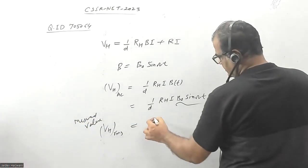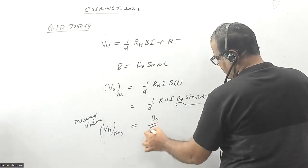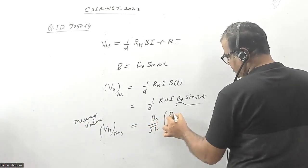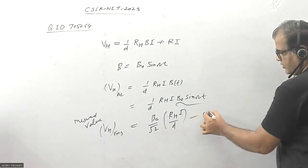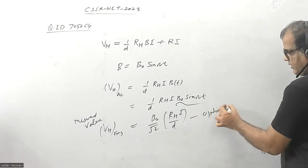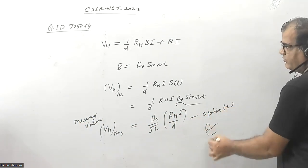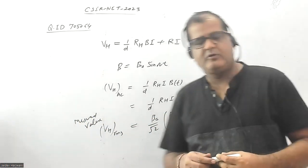This will come out as (B_0 / √2) * R_H * I / D, and this is given as option 2. This is the correct answer for this given question.